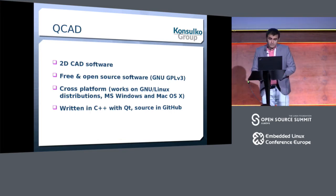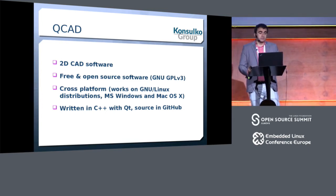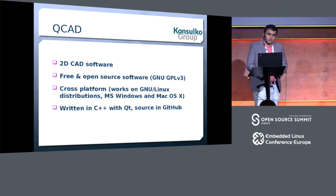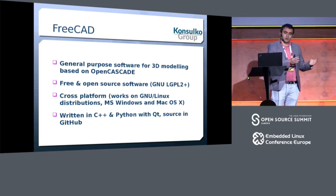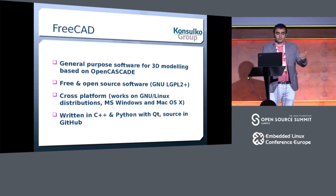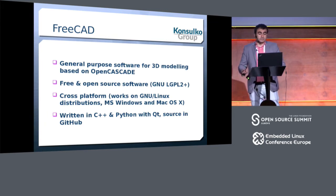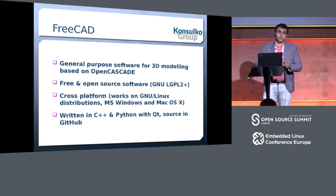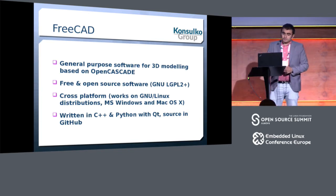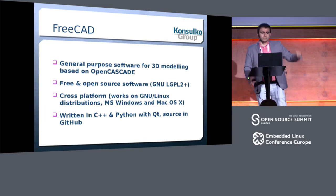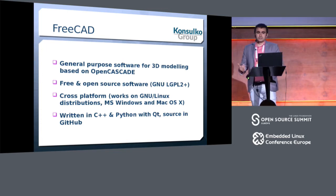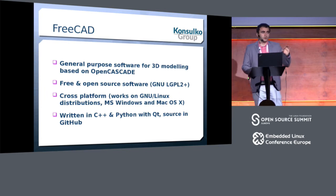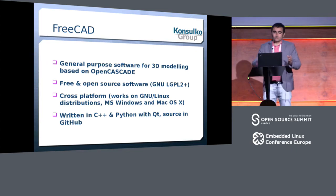QCAD is a two-dimensional CAD software, again free and open source, again written in C++ with Qt, and works on multiple platforms. FreeCAD is one of the most popular free and open source CAD tools — it combines visual design using OpenCASCADE and also works everywhere cross-platform, written in C++ and Python with Qt. It's more difficult than OpenSCAD but easier than Blender, and it's made especially for 3D objects that you can then print.